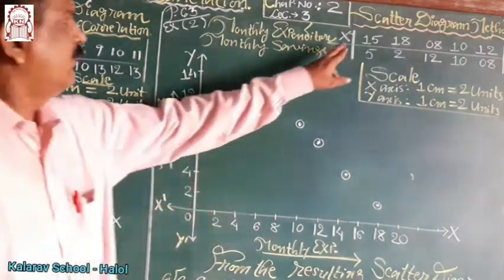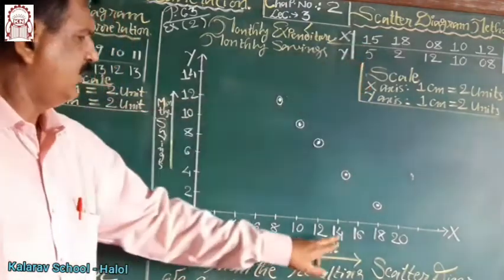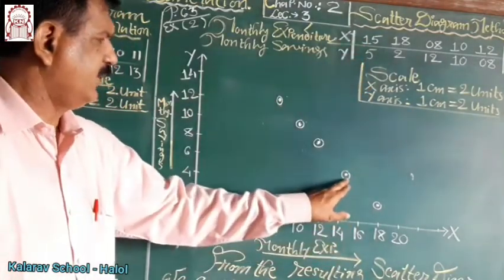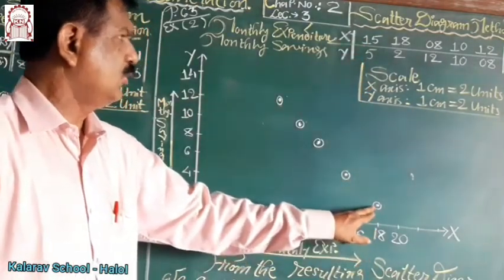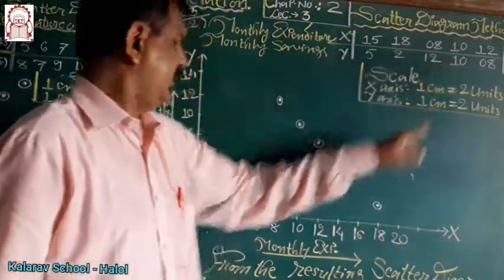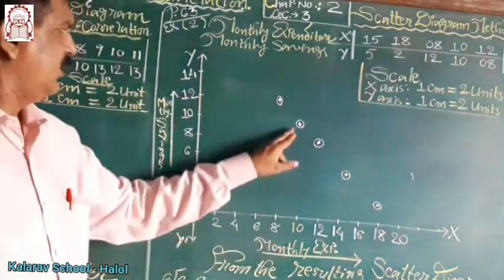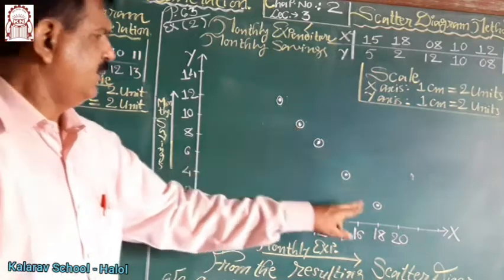Means, pairwise, 15 and 5. Here, 15 and 5, this point. 18 and 2, 18 and 2. 10, 10. Here, 10, 10. This is the point 10, 10.